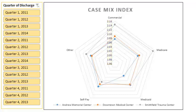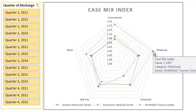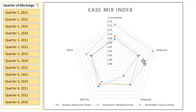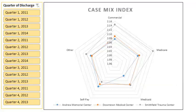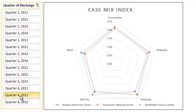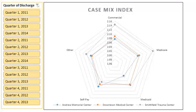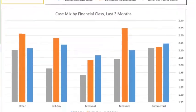Points farther out towards the outer perimeter have a higher value. Read the values from the labels, or position the cursor over the data point to get a pop-up tip displaying the CMI. The radar chart has a slicer for choosing the time frame. Beneath the radar chart is a bar chart showing CMI for the most recent three months grouped by financial class.